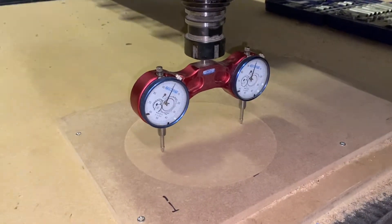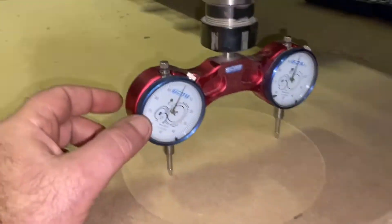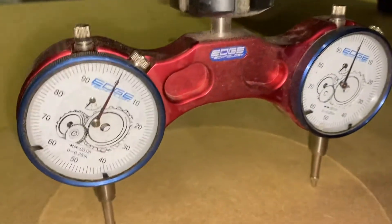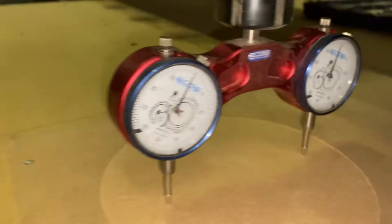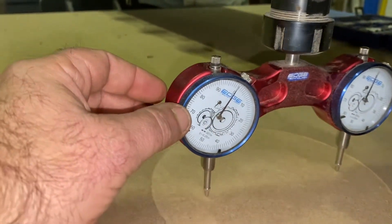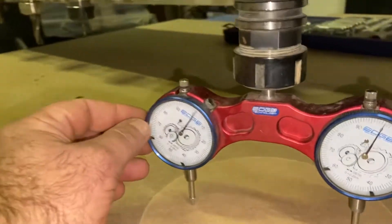Okay, you can see I've set the dial gauges. I've set them off to zero, and as I spin the spindle around them, they should stay at zero.